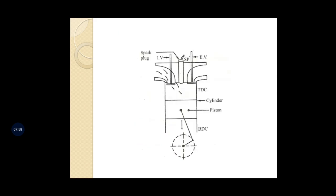Looking at the figure: bore means the inside diameter of the cylinder — whatever diameter exists inside the cylinder is called the bore. Stroke means the linear distance traveled by the piston from the bottom dead center to the top dead center — this is called stroke length. For horizontal cylinders, we use the terms inner dead center (IDC) and outer dead center (ODC) instead.